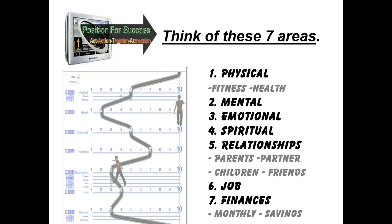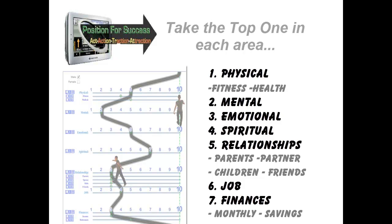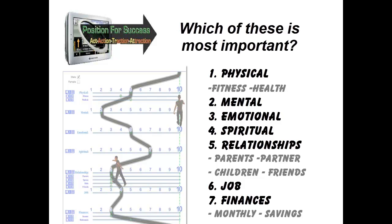What I need you to do now is think of these seven or eight areas. Take the top one in each of these areas and ask yourself the question: which one of these is most important? Now we're beginning to narrow it down.